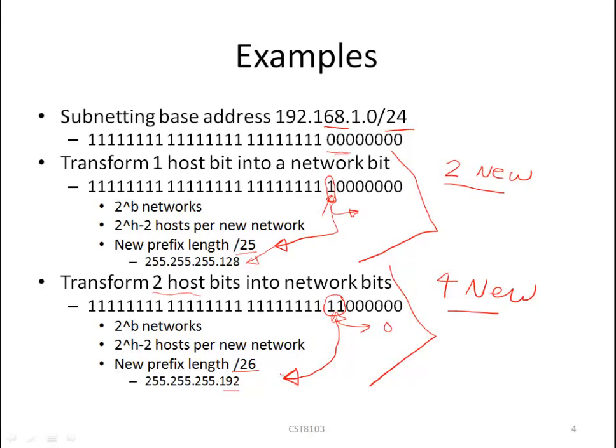The formula here: 2^b where b represents the number of borrowed bits or transformed bits. So b is 1, so 2^1 equals 2 new networks. This formula gives us the number of new blocks or new networks resulting from the transformation. For each new network we have 2^h minus 2, where h is the number of host bits.